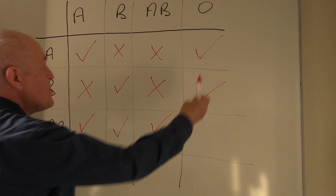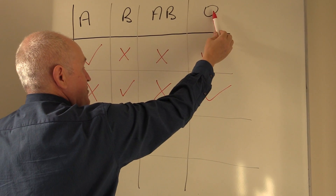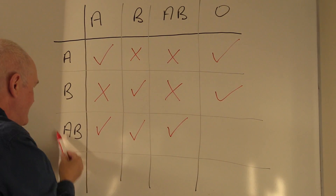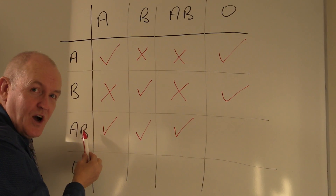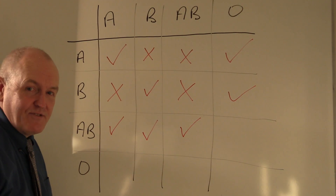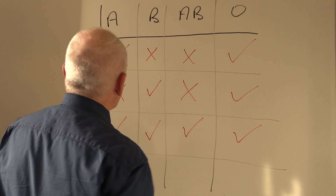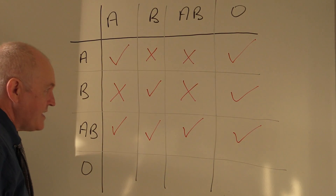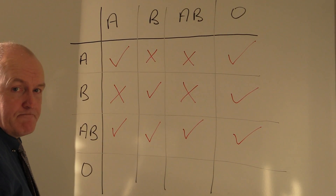O contains no antigens, so there are no antigens to react with any antibodies in the AB recipient. That is an acceptable transfusion in theory, based on this ABO system.